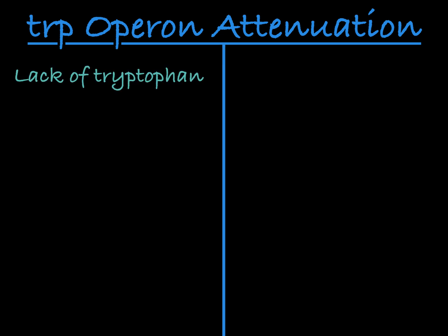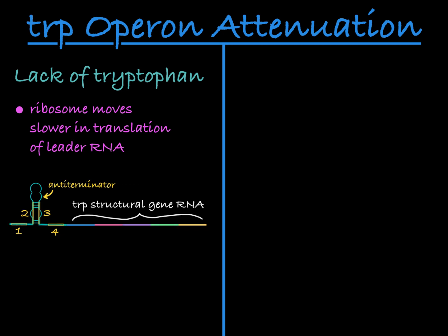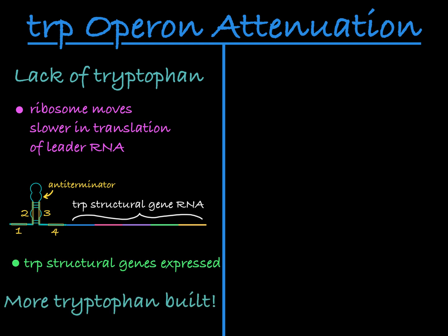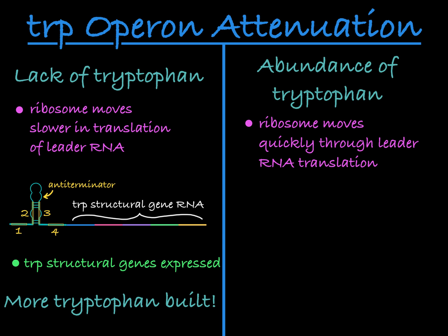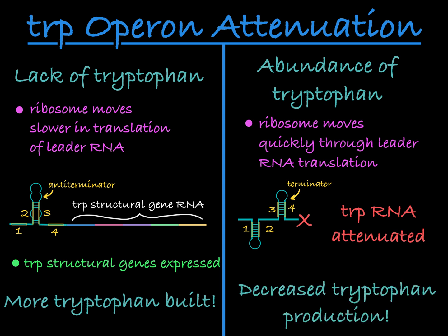To review: when there is a lack of tryptophan in the cell, the slower movement of the ribosome as it translates the RNA leader open reading frame allows the leader RNA to fold into the conformation that includes the anti-terminator, which allows transcription of the full sequence of the tryptophan structural genes, which are then translated into proteins that help build more tryptophan. When there is an abundance of tryptophan, the ribosome moves quickly through the translation of the leader RNA, leading to the terminator hairpin loop conformation, which causes transcription of the trp operon to end early before the structural genes, so the cell will not produce the proteins necessary to make tryptophan.